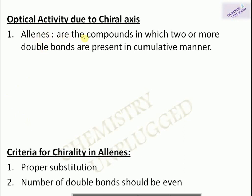First are allenes. Allenes are compounds in which two or more double bonds are present in a cumulative manner — meaning double bonds in a continuous or consecutive arrangement. When the number of double bonds is even, the two substituents on one terminal carbon are in one plane and the two substituents on the other terminal carbon are in a perpendicular plane.